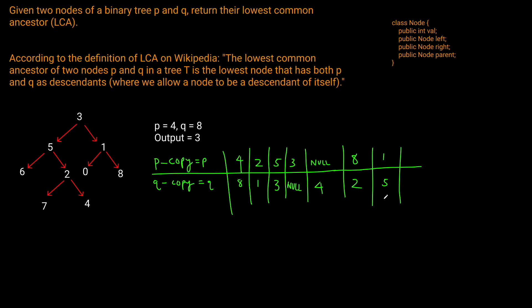Does one equal five? No. So we go into the parents again for both nodes. The parent of p_copy (which is one) is going to be three. And here's where the magic happens — q_copy's parent is also three. So now we've hit the point where they're actually equal. We know we've found the least common ancestor, which is three.